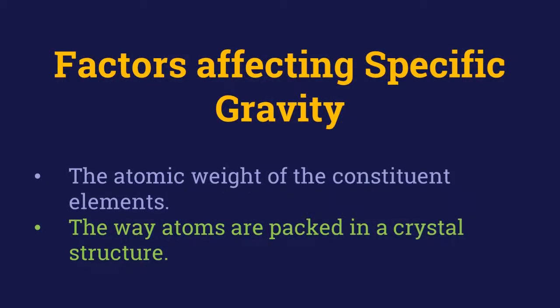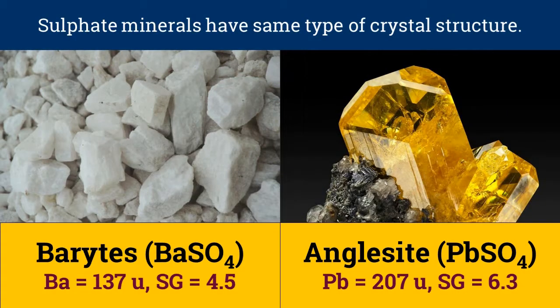There are two factors which greatly affect the specific gravity of minerals: the atomic weight of the constituent elements, and the way atoms are packed in the crystal structure. To demonstrate the effect of atomic weight, consider barite on the left and anglesite on the right. Both are sulfate minerals with the same type of crystal structure, yet barite has a lower specific gravity than anglesite because the atomic weight of barium in barite is less than the atomic weight of lead in anglesite.